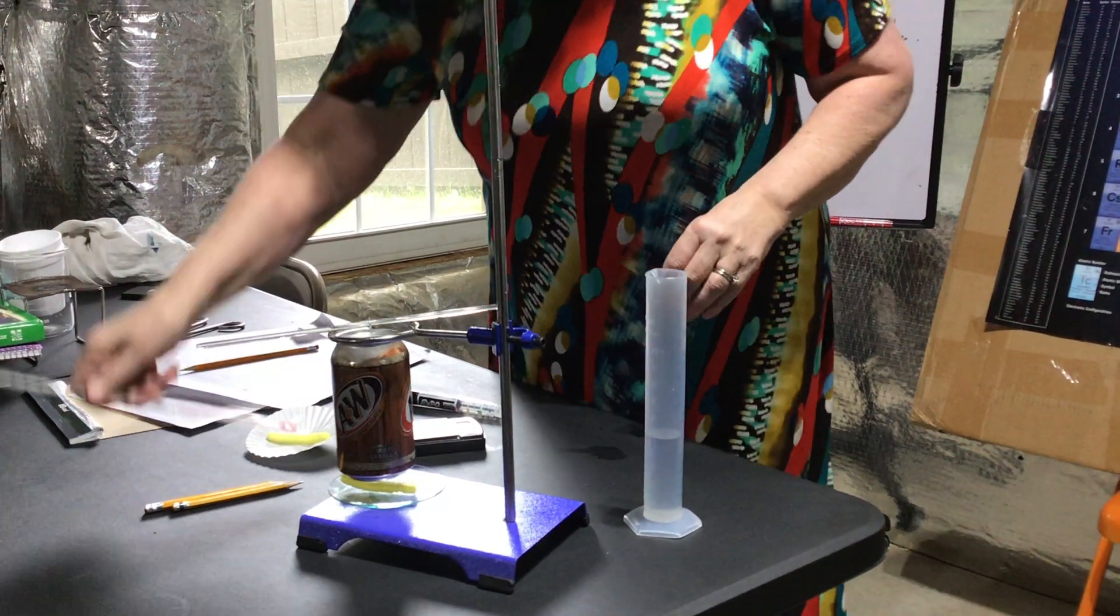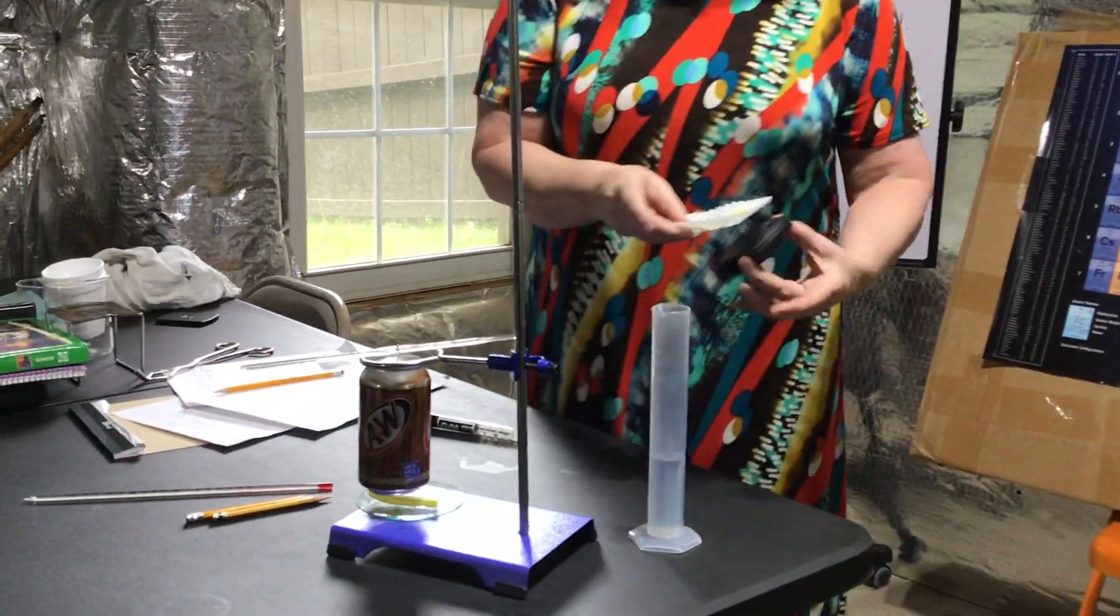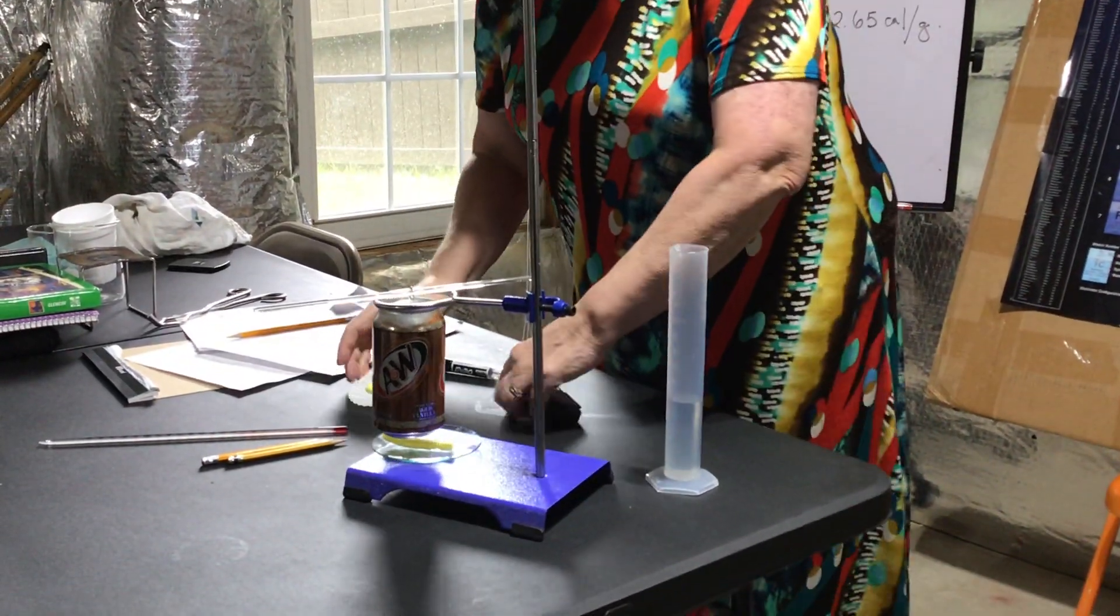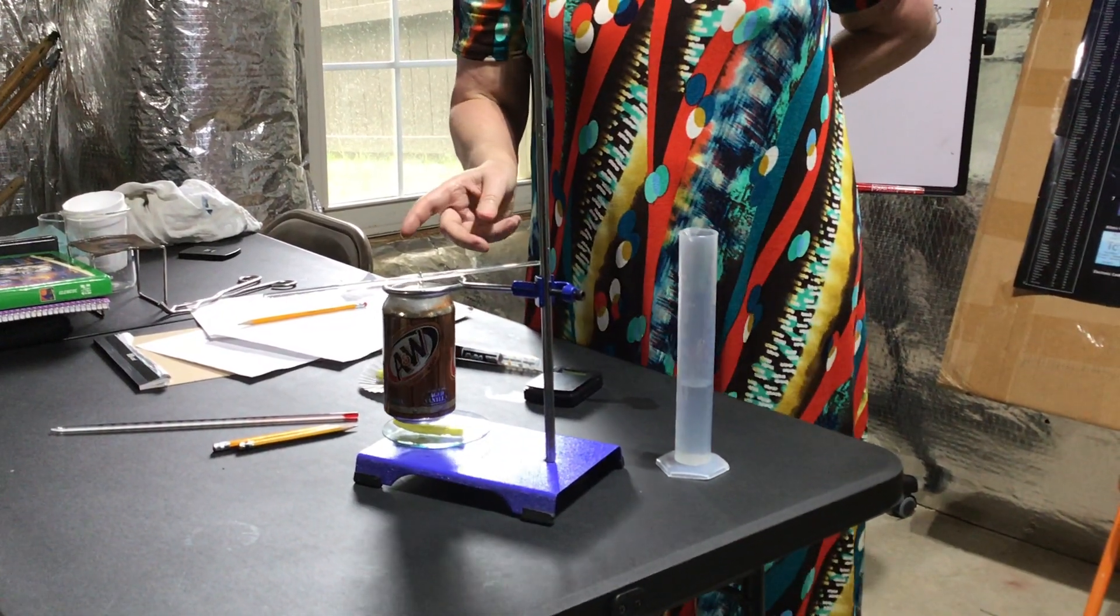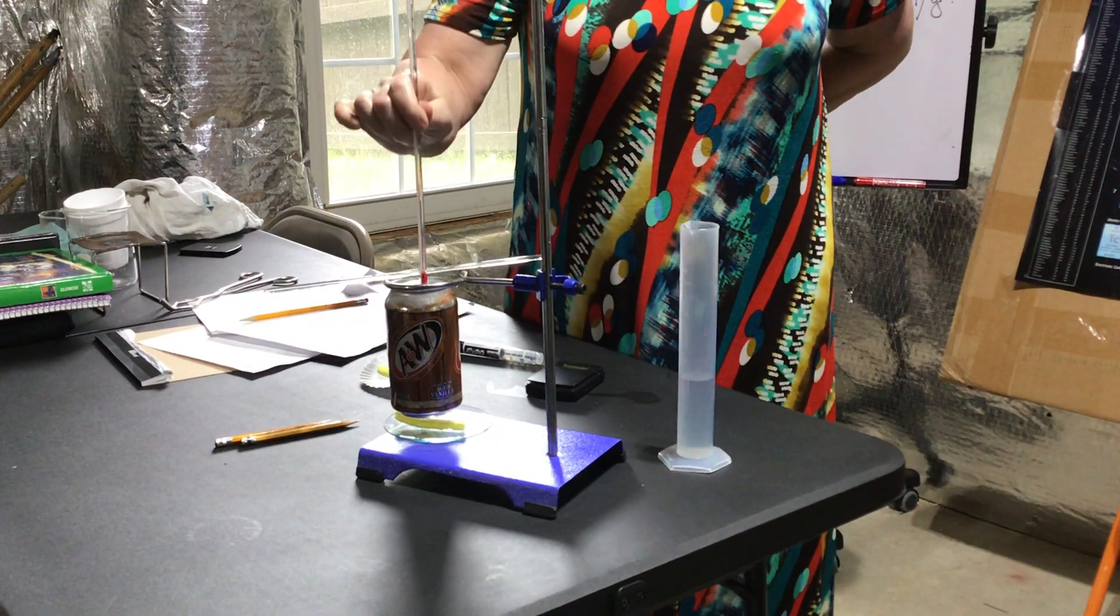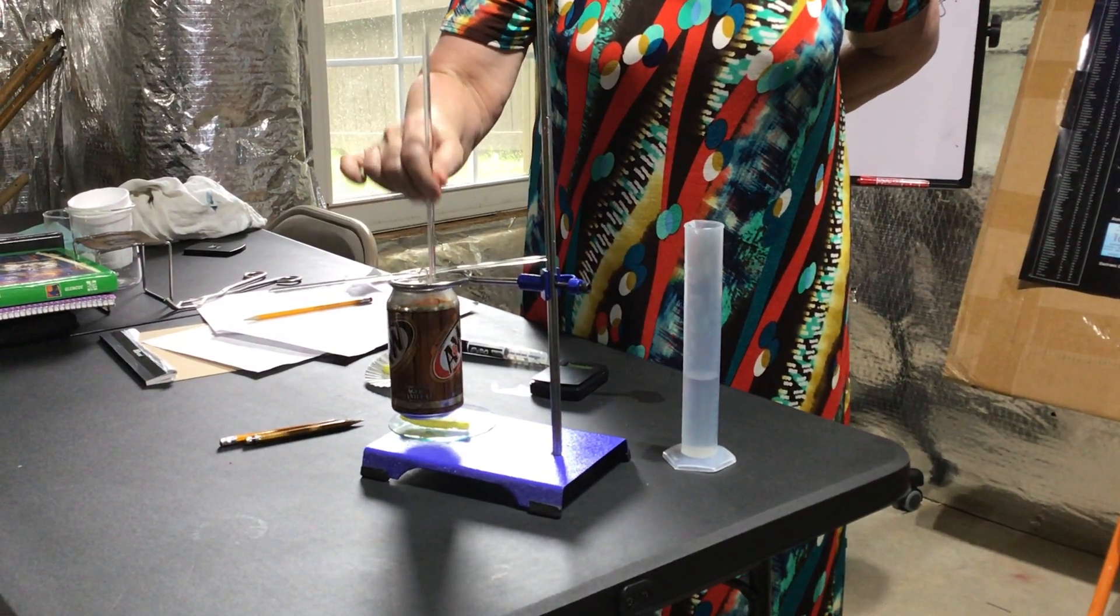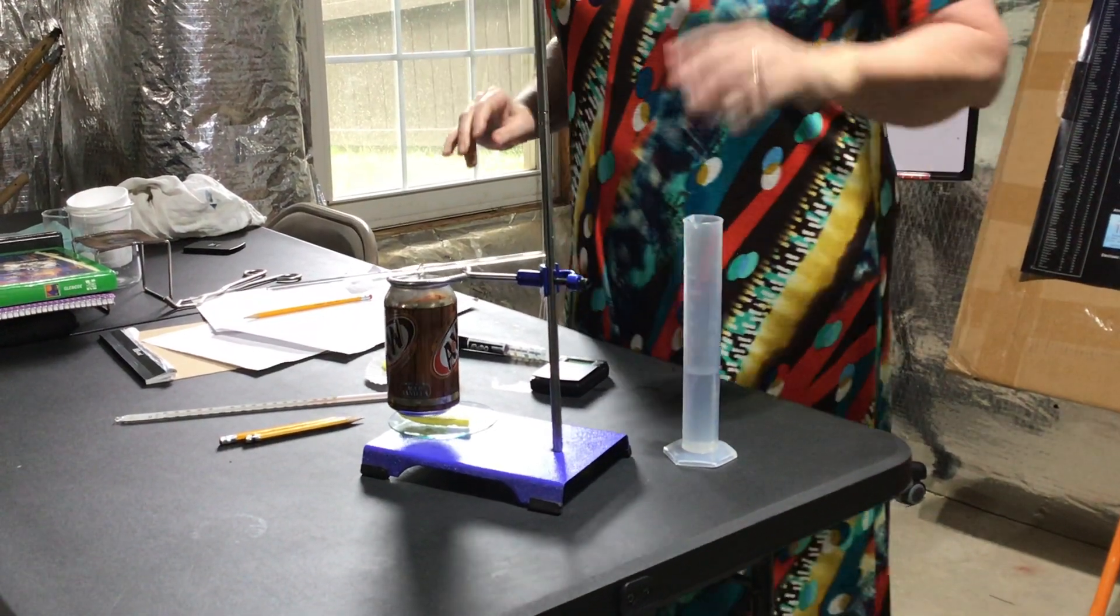Write it down. Then you're going to light - you have already taken your mass of your puff. You're going to light that puff. After it stops burning, you allow this to cool but you immediately take the temperature of the water and record what that temperature was.